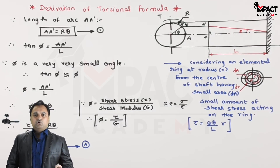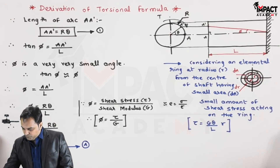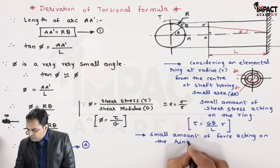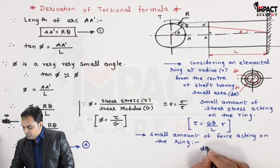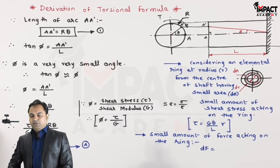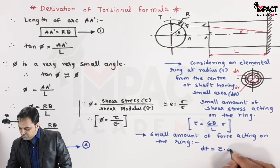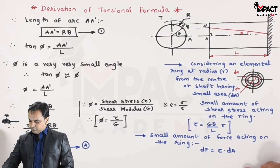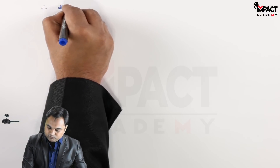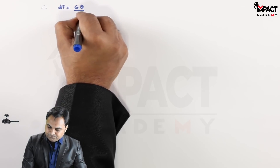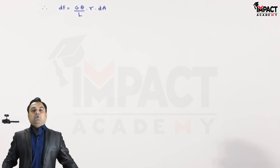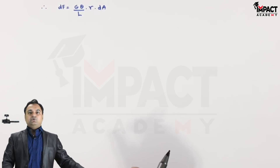The small amount of shear force acting on the ring is dF. Since stress equals force over area, force equals stress into area. So dF = tau · dA = (G·theta / L) · r · dA.